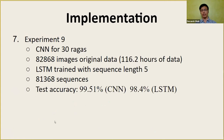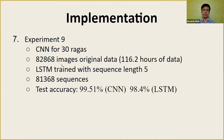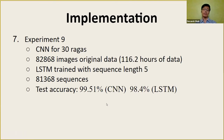Finally, for experiment nine, we trained the CNN and LSTM for the entire dataset of 30 Ragas. From 116 hours of data, we generated 82,868 spectrograms, and correspondingly 81,368 sequences for the LSTM to train upon. These are the testing accuracies — it seems that given more data, the performance of the model keeps on improving.